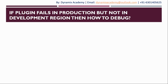If a plugin fails in the production environment but not in the development region, how do you fix or debug the issue? I personally have faced this kind of issue in my career. Whenever you land in this kind of situation, you need to observe the plugin behavior carefully in your production environment.